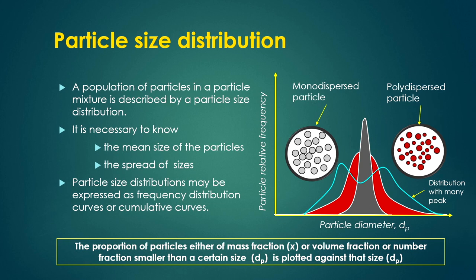A population of particles in a particle mixer is described by a particle size distribution, and it is necessary to know the mean size of those particles in the mixer where that particle size distribution exists, and also the spread of the sizes. The particle size distribution can be expressed as frequency distribution curves or cumulative curves. For example, if we have a mixture of different sized particles within a range of 1 micrometer to 100 micrometers, we can segregate this range into different classes like 1–10 μm, 10–20 μm, 20–30 μm, 30–40 μm, 40–50 μm, and so on — giving 10 classes.